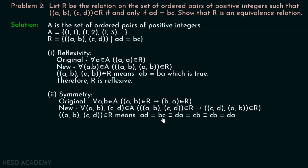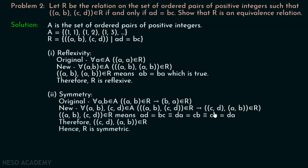AD equals BC is equivalent to DA equals CB, and this is equivalent to CB equals DA. What is the meaning of CB equals DA? This means ((C, D), (A, B)) belongs to R. So when ((A, B), (C, D)) belongs to R, then ((C, D), (A, B)) also belongs to R. Hence R is symmetric.